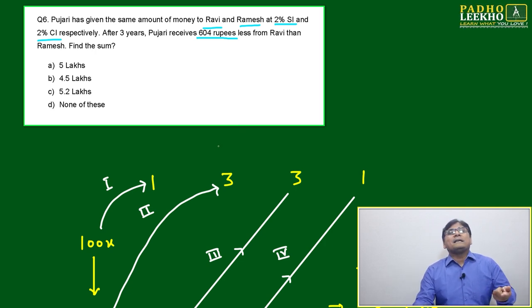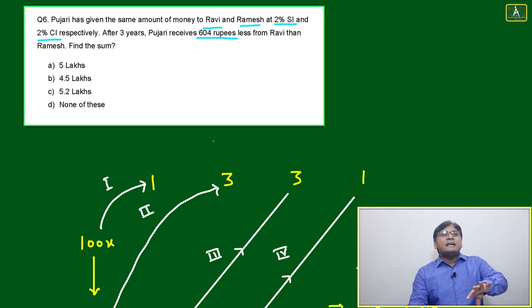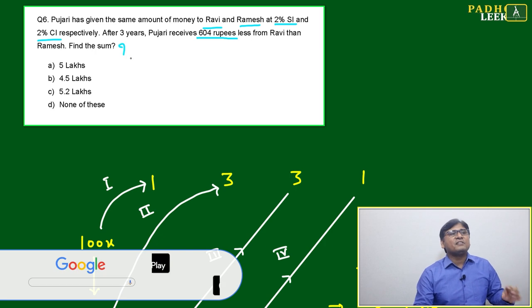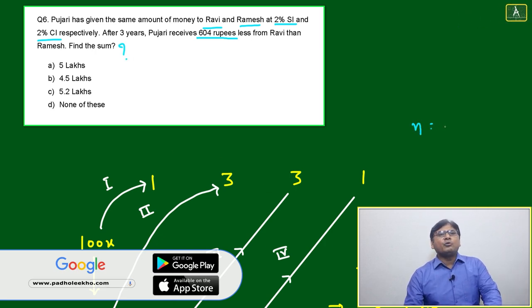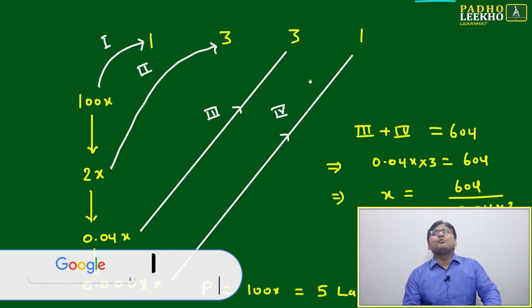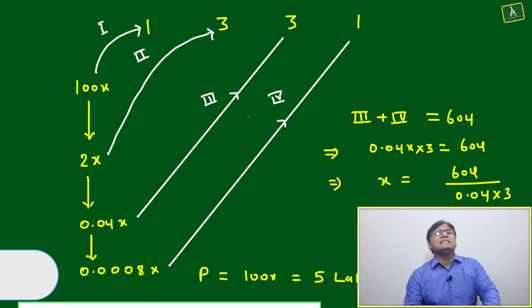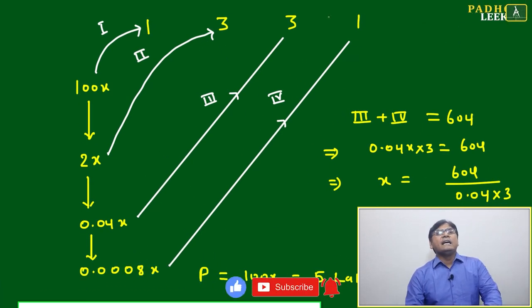Pujari received 604 rupees more from Ramesh, or 604 rupees less from Ravi than Ramesh. Find the sum - what is the principal amount? We apply n=3. You can solve by formula also, but this method is very easy.